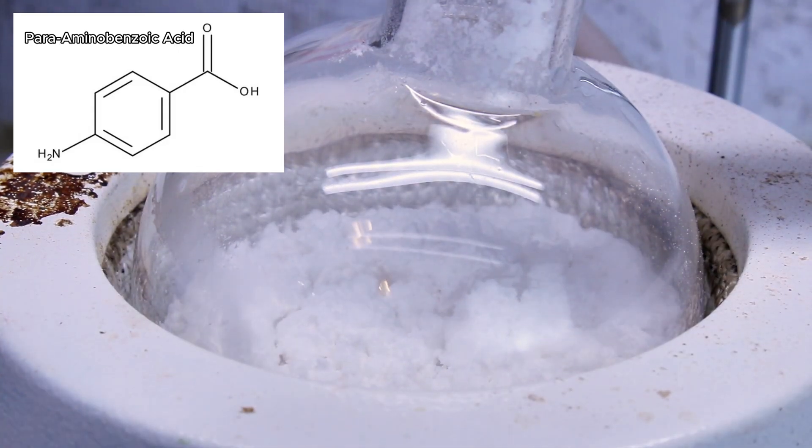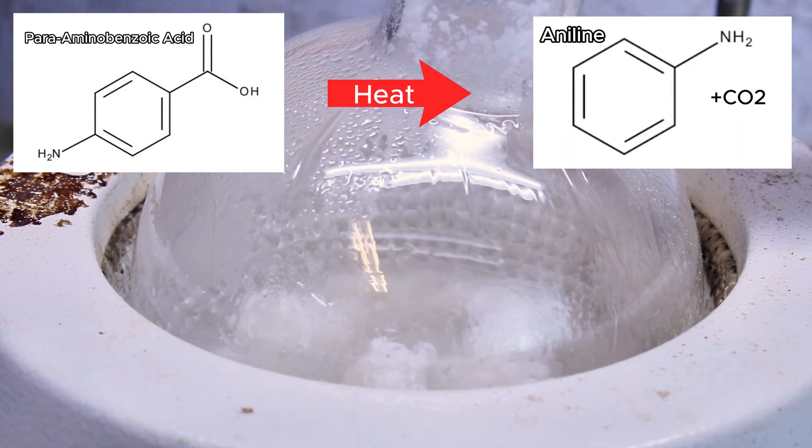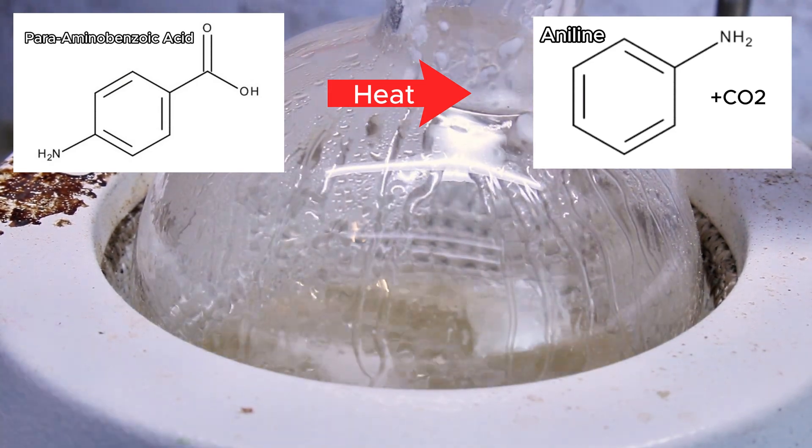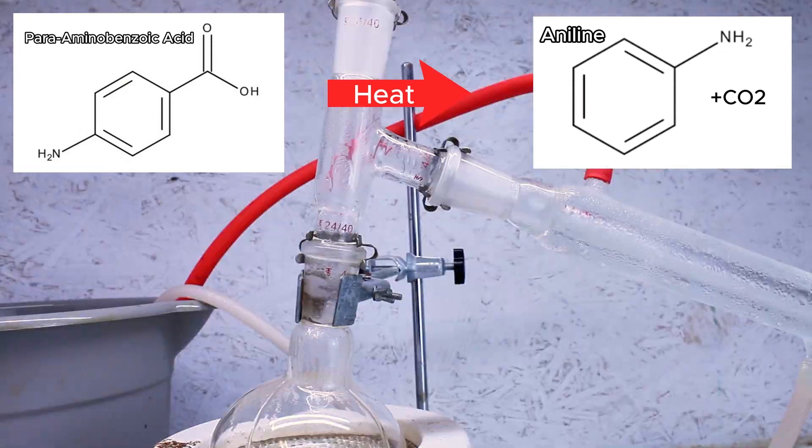Now PABA is shorthand for para-aminobenzoic acid, and is essentially just aniline with the carboxyl group situated para to the amine group. When this chemical is heated, the carboxyl group breaks off and forms carbon dioxide gas and liquid aniline. The carbon dioxide then floats away and out of the system while the aniline is left behind.